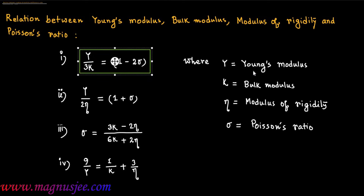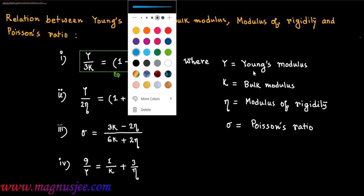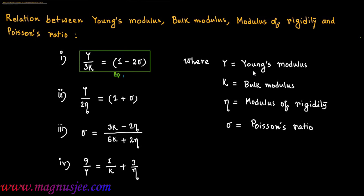The first relation is Y/3K = 1 - 2σ, which is the relation between Young's modulus Y, Bulk modulus K, and Poisson's ratio σ.